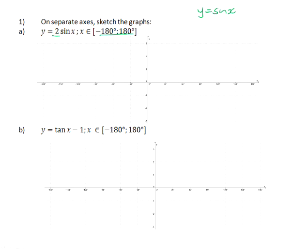So what we know is that the range of that graph is now going to be from negative 2 to 2, because we are sketching the graph y equals 2 sin x.